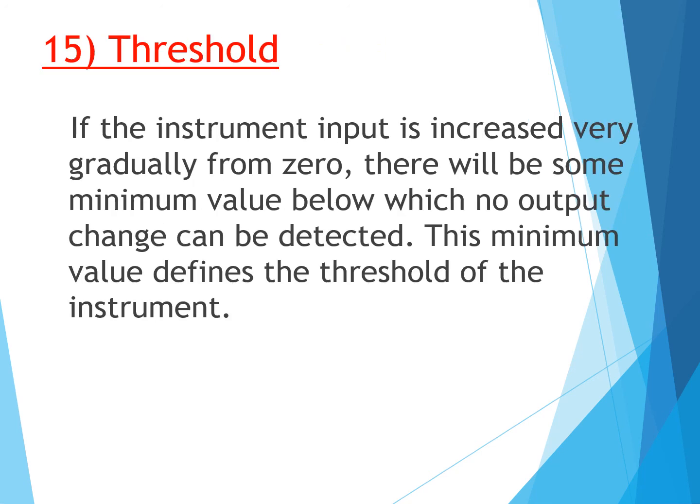The next term is threshold. If the instrument input is increased very gradually from zero, there will be some minimum value below which no output change can be detected. This minimum value defines the threshold. For example, on a weighing balance measuring in whole kilograms, if the weight is 1.05 kg it shows only 1 kg — the 0.05 kg is not shown. The threshold values are 1, 2, 3, 4, 5 kg.